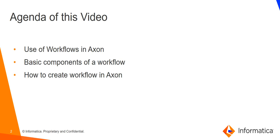Let's begin with the first topic: the use or need of workflow in Axon. As referred by its name, a workflow defines the complete flow of executable steps required to complete a particular task. It not only defines what steps are required, but also which user or group of users is responsible for a particular task. Accordingly, users also get notifications — for example, if a task is pending on a particular user, they will get a notification. We will discuss this in detail in Part 2 regarding execution of workflows.